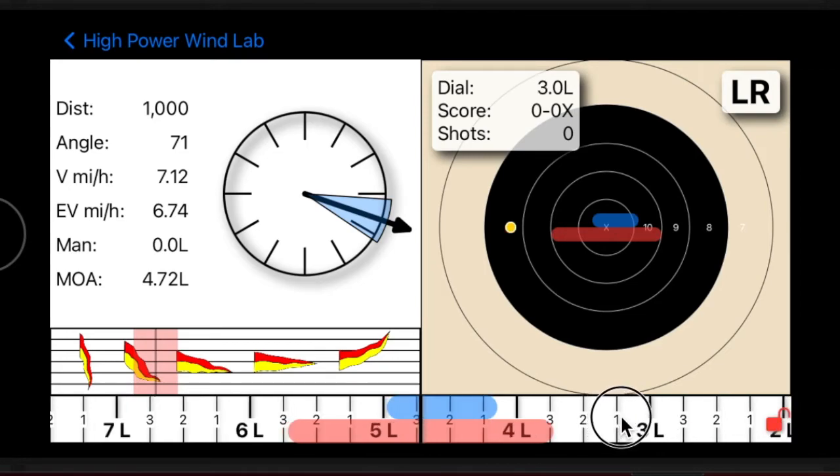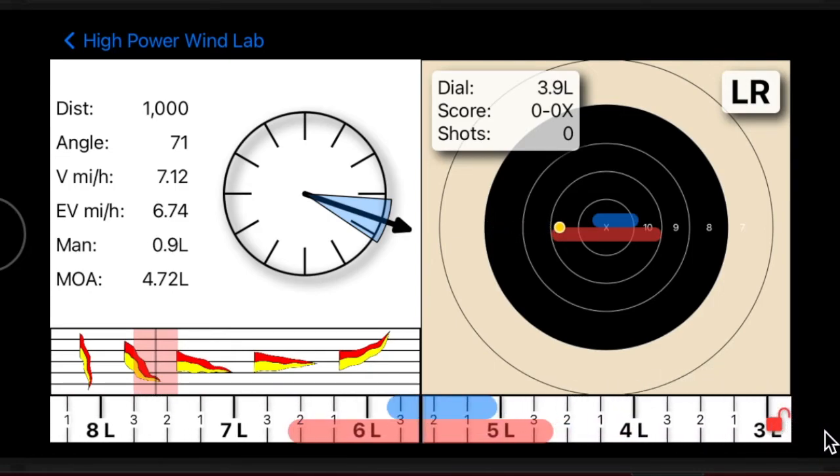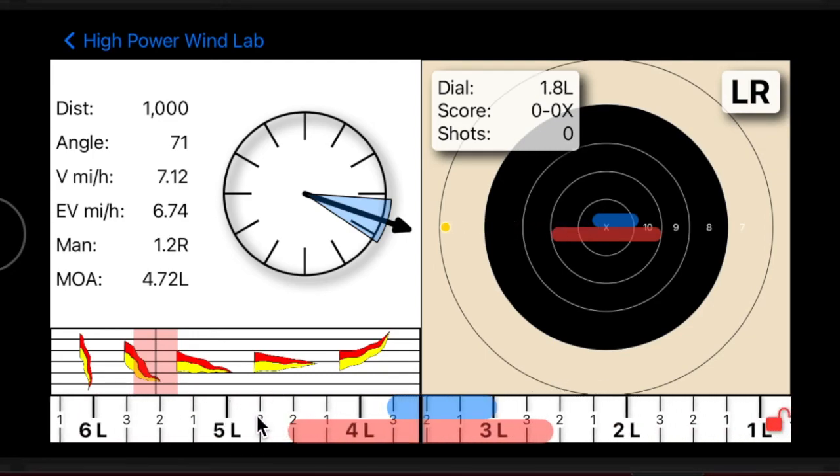To remove the manual correction, you can either drag the scale until the man value is 0, or simply long press the scale, which will reset it to 0.